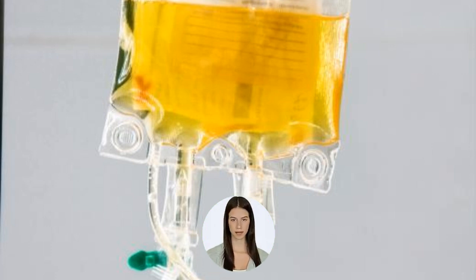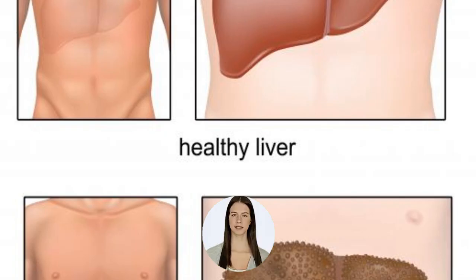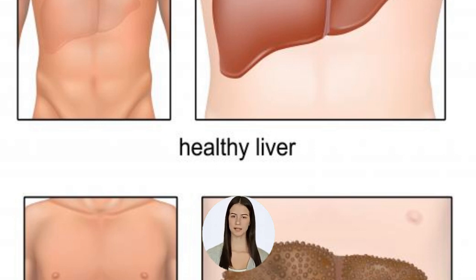In medicine, immunoglobulin injections made from donated human blood are used to treat certain conditions, especially those that weaken the immune system. Conditions that affect gamma globulin levels are measured through a laboratory test called serum protein electrophoresis, or SPEP.